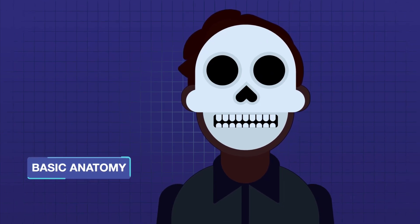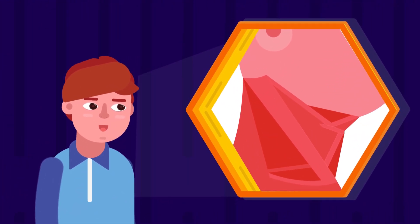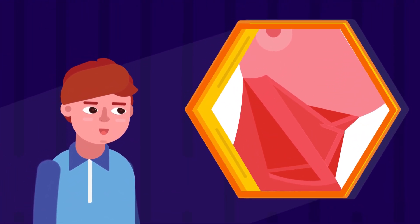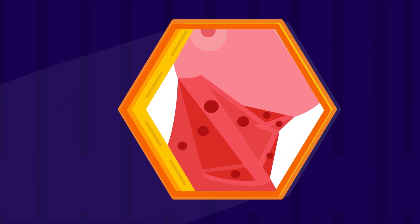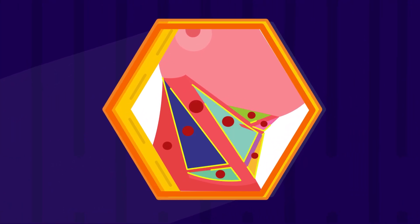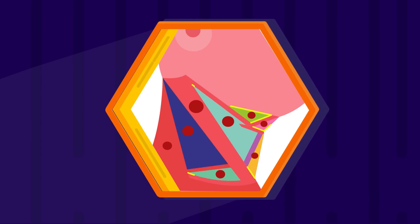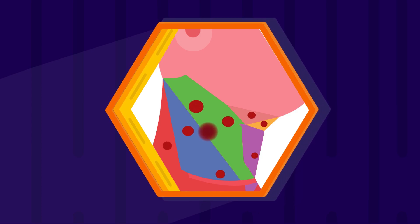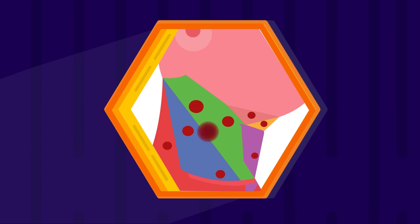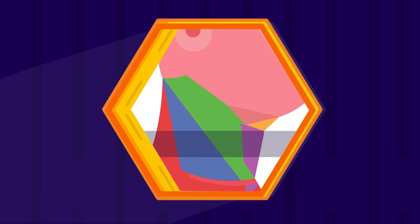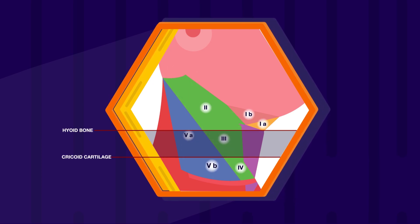Workup for neck masses requires a basic understanding of the structures of the neck and at which level they lie. One way to localize the different structures is to divide the neck into a number of triangles. Another way to define location is the levels system, which is especially useful when defining enlarged lymph nodes. Lymph node groups and their respective regions are assigned numbers from level 1 to level 7.